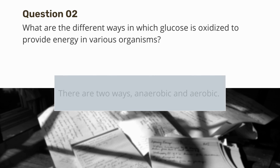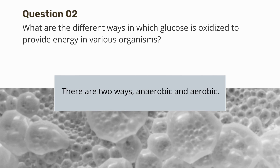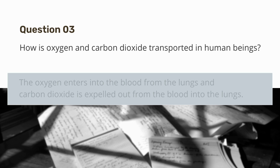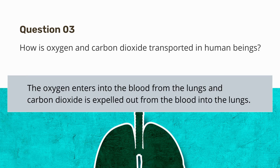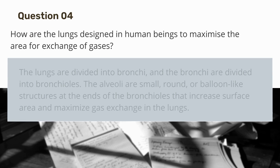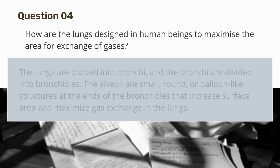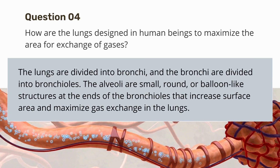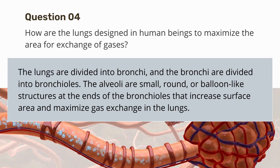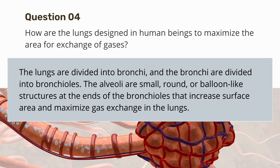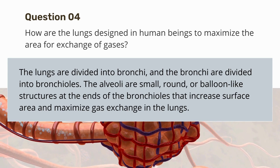What are the different ways in which glucose is oxidized to provide energy in various organisms? There are two ways: anaerobic and aerobic. How is oxygen and carbon dioxide transported in human beings? Oxygen enters the blood from the lungs and carbon dioxide is expelled from the blood into the lungs. How are the lungs designed to maximize the area for gas exchange? The lungs are divided into bronchi, then bronchioles, with alveoli — small balloon-like structures — at the ends that increase surface area and maximize gas exchange.